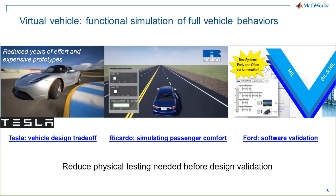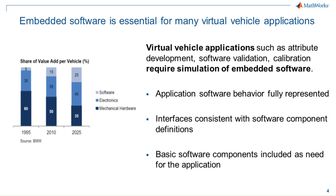Tesla uses virtual vehicle for design trade-off and component sizing studies. Ricardo used one of our vehicle models to simulate passenger comfort and autonomous driving applications. You may have seen the Ford presentation where they used their virtual vehicle framework called FAST for a variety of system analyses, including software validation. Customers like BMW are seeing the amount of software increasing in what they call value-add-share, and it's becoming a key differentiator for many brands, driving the need to test software as soon as possible.